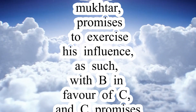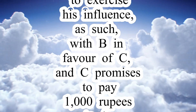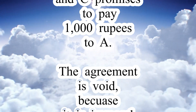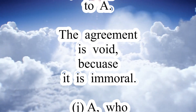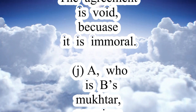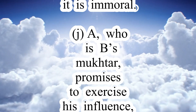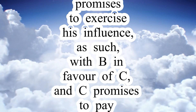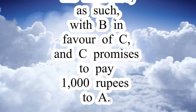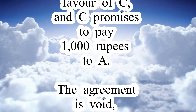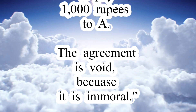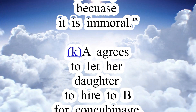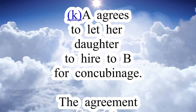Illustration J: A, who is B's mukhtar, promises to exercise his influence, as such, in favor of C, and C promises to pay 1,000 rupees to A. The agreement is void, because it is immoral.